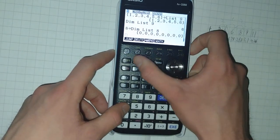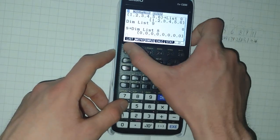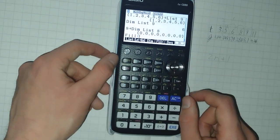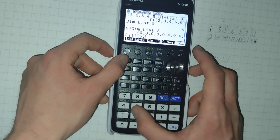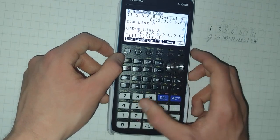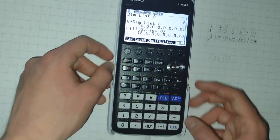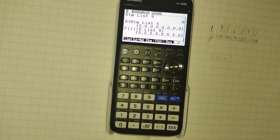So why would that be useful? Well, you can combine it with fill to fill a list with any number you want. So now list eight is filled with fives.